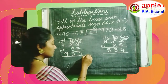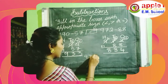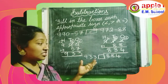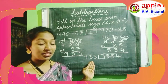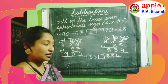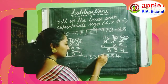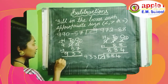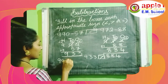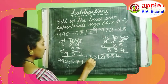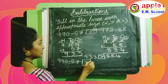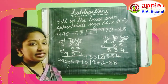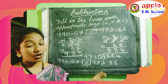Let us write the answers: 933 and 884. Which is bigger? 933 is bigger. So 933 is greater than 884. Therefore, 990 minus 57 is greater than 972 minus 88. Understood children? That is how we solve these comparison sums.